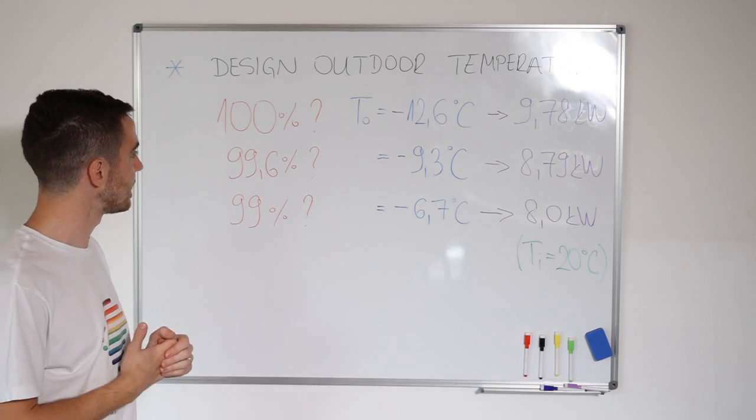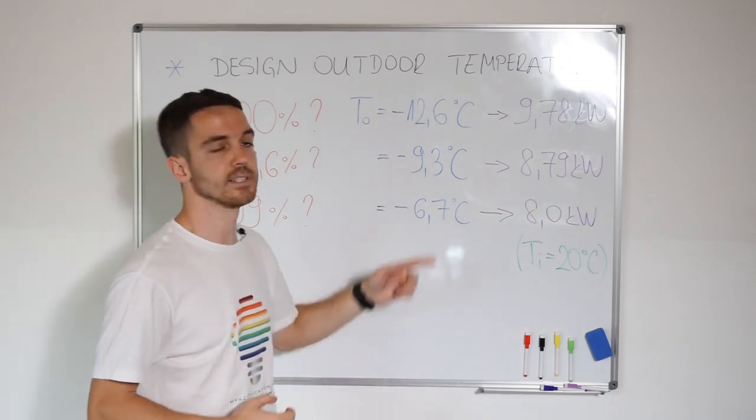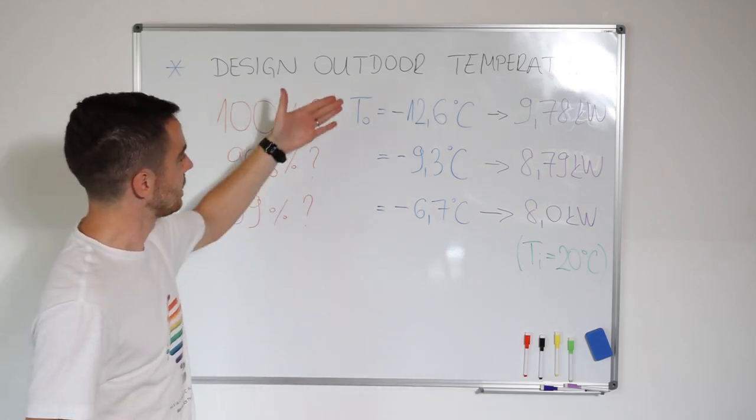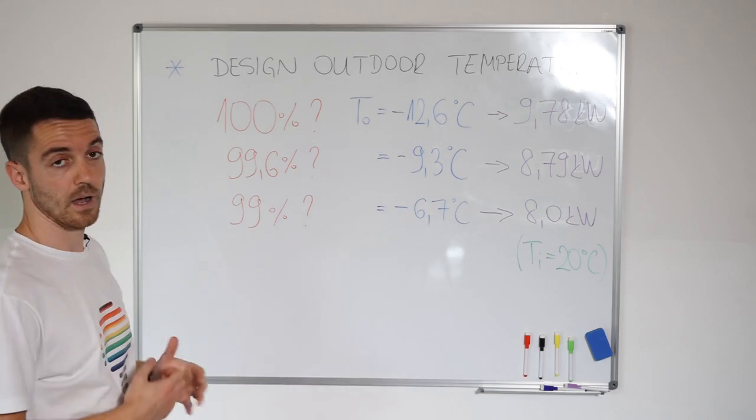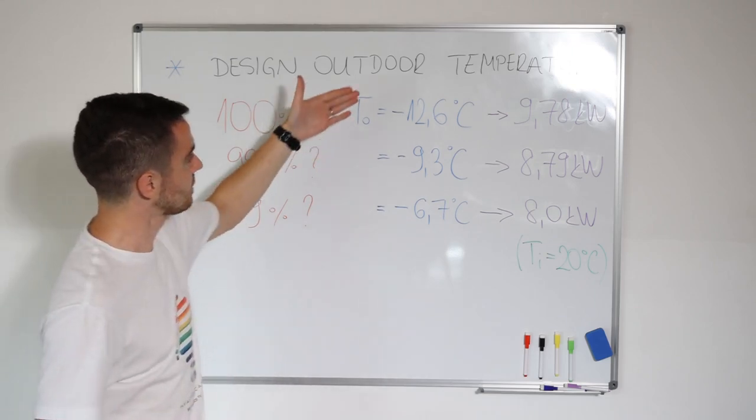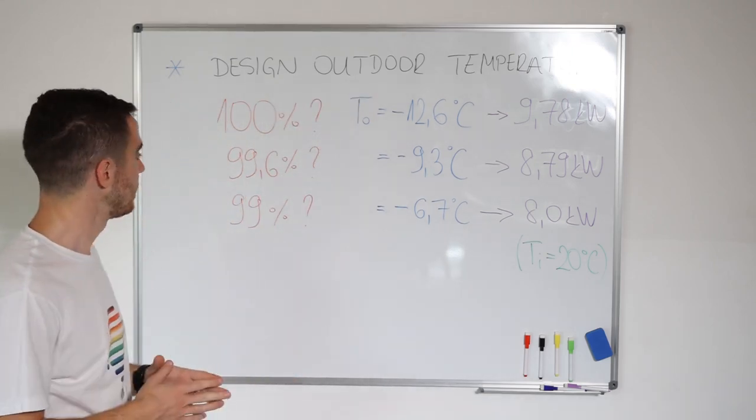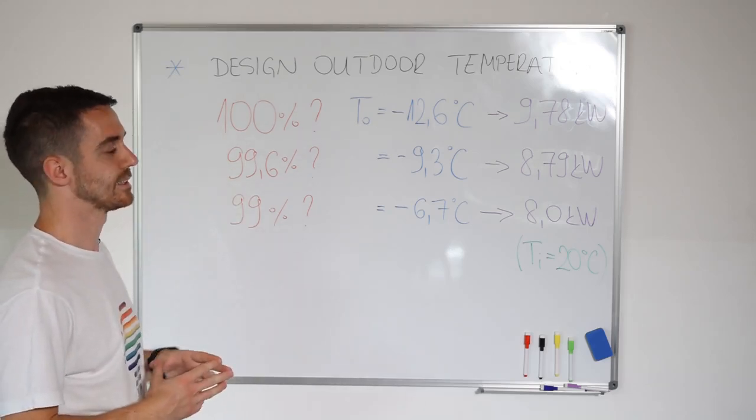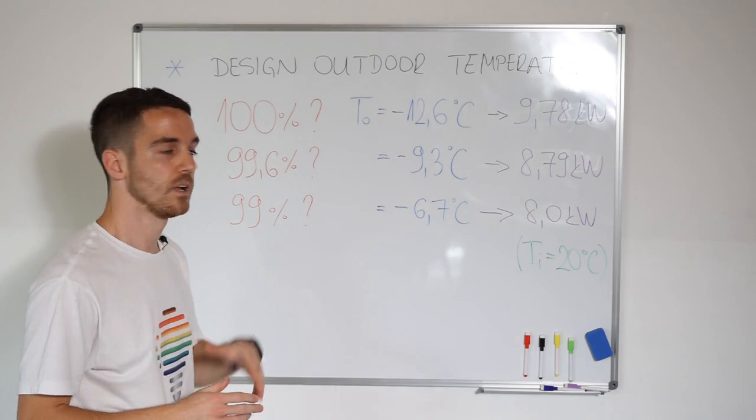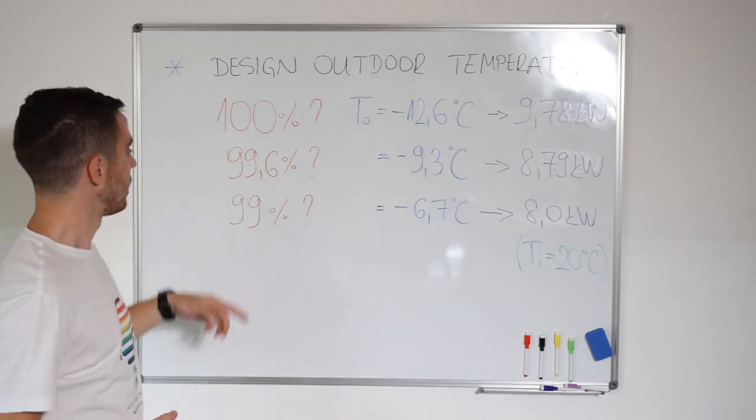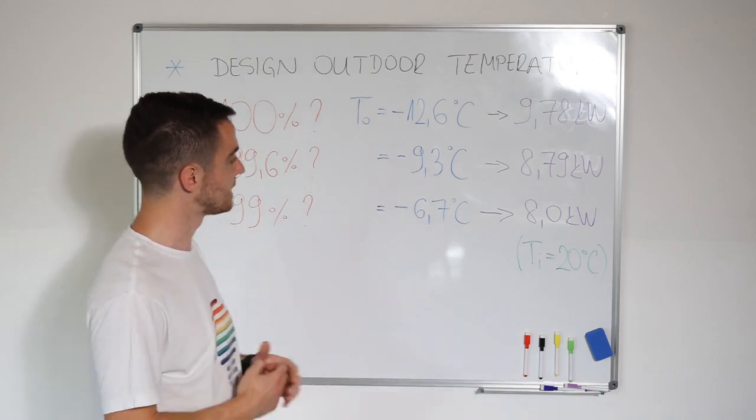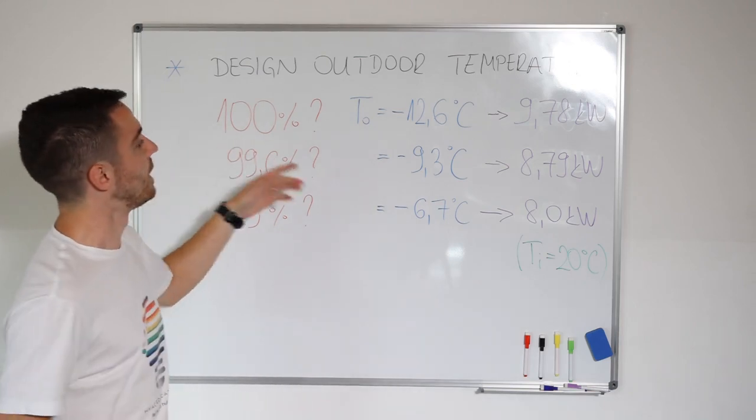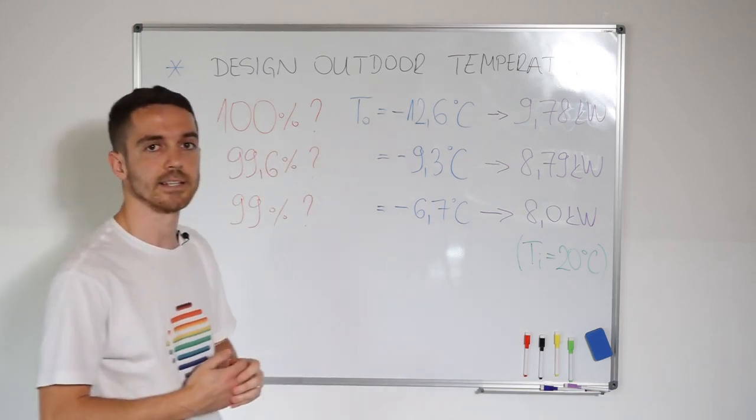And for Zagreb, 99.6% is minus 9.3 degrees Celsius. And if you choose 99%, it's minus 6.7 degrees Celsius. You can clearly see how we are lowering our percentage where outdoor temperature is higher. This is fine because we are using statistical deviation. Here 1% of the year will be lower than minus 6.7. And here for average, it will not be lower than minus 12.6 degrees Celsius.